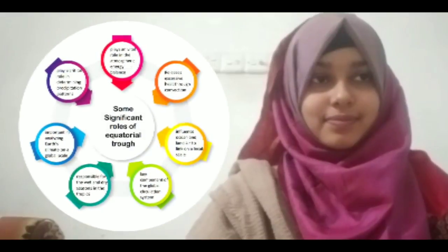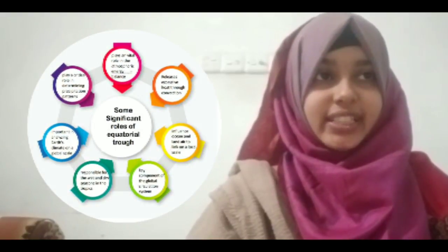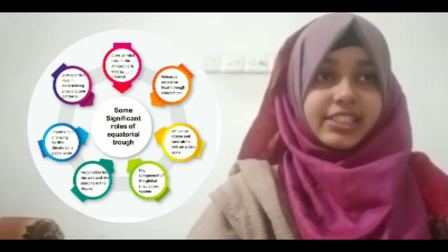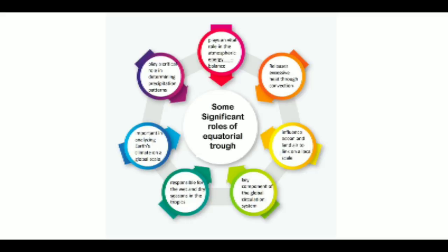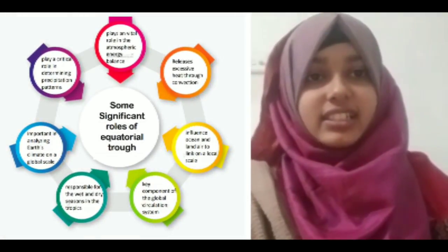Some significant roles of the equatorial trough include: it plays a vital role in atmospheric energy balance, releases excessive heat through convection, and influences ocean and land air linkage on a local scale. It is a key component of the global circulation system, responsible for wet and dry seasons in the tropics, important in analyzing Earth's climate on a global scale, and plays a critical role in determining precipitation patterns. Additionally, accurate detection of the equatorial trough is highly significant for guiding model improvements, especially in particle and latitudinal variation.